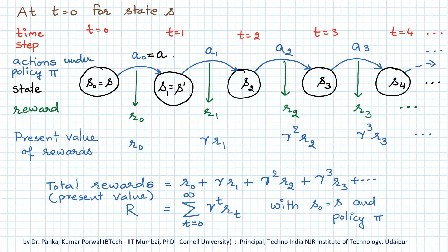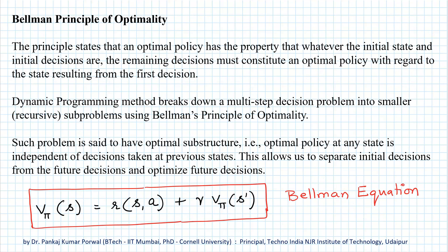That's where the Bellman principle of optimality becomes handy. What the principle states is that an optimal policy has the property that whatever the initial state and initial decisions are, the remaining decisions must constitute an optimal policy with regard to the state resulting from the first decision. What Bellman principle of optimality does is that it breaks down the multi-step optimization problem into a single-step optimization problem.